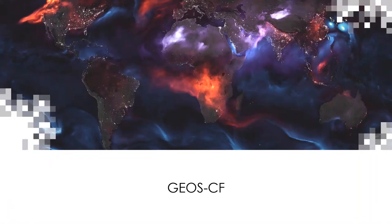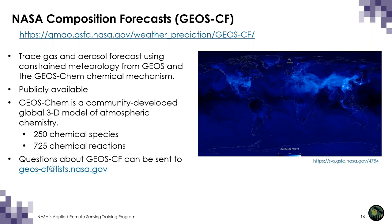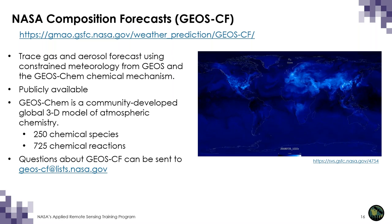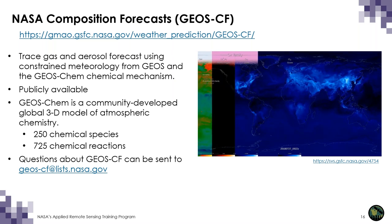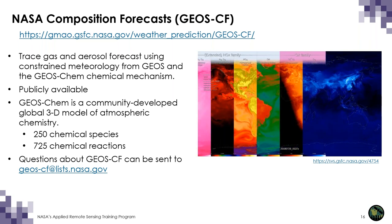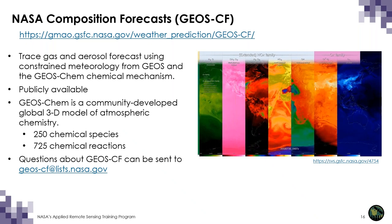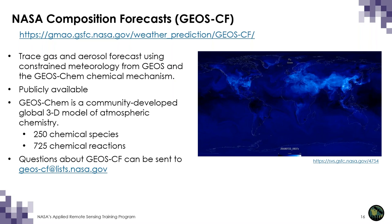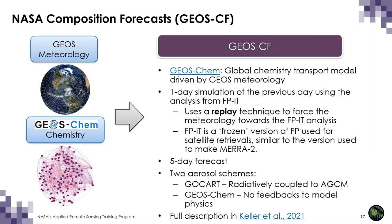Next, we'll talk about GEOS Composition Forecast, or GeoCF. The GeoCF forecast system issues daily forecasts of global three-dimensional distributions of trace gases and aerosols. GeoCF uses GEOS meteorology along with the GEOS-Chem chemical mechanism, which consists of over 250 chemical species and over 725 chemical reactions.